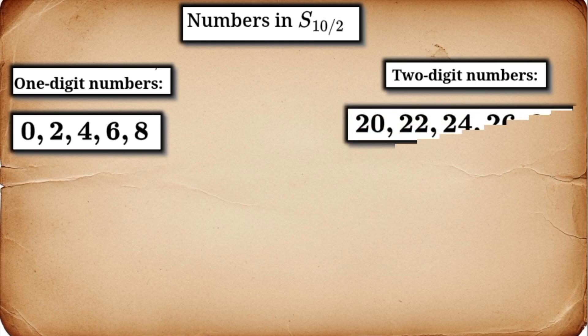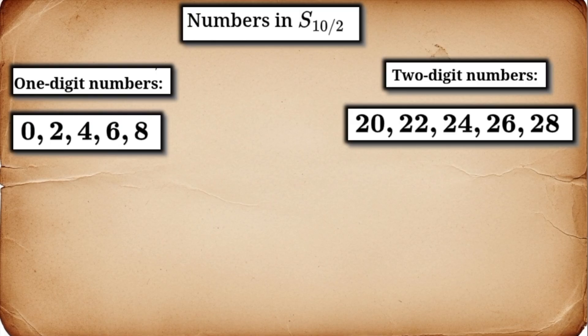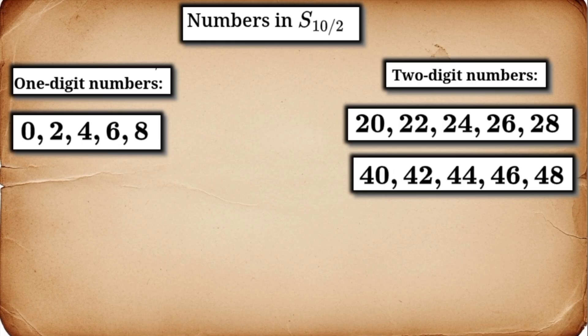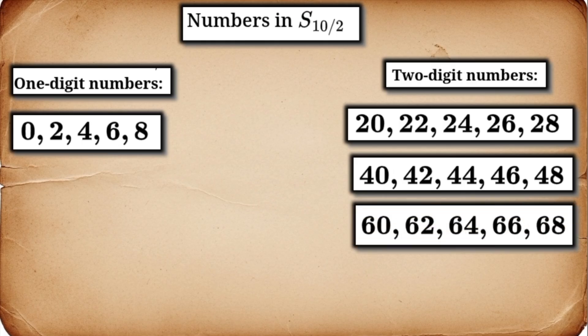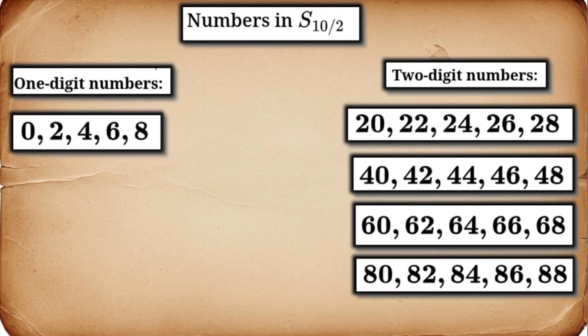Now, how do we make two-digit numbers? We take a digit, shift it to the tens place, and add another even digit. So, starting with 2 in the tens place, we get 20, 22, 24, 26, 28. With 4 in the tens place: 40, 42, 44, 46, 48. And so on: 60, 62, 64, 66, 68, 80, 82, 84, 86, 88.